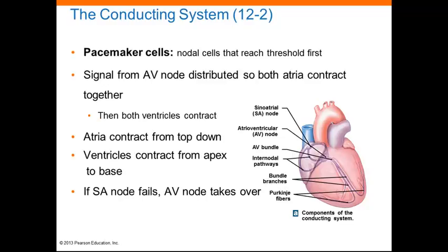Nodal cells are unusual because their plasma membranes can depolarize spontaneously, generating an action potential at a regular interval. The nodal cells that reach threshold first are called pacemaker cells, and they're located in the sinoatrial node. This ensures that the atria contract together and prior to the ventricles, and that the ventricles contract together from the apex towards the base.